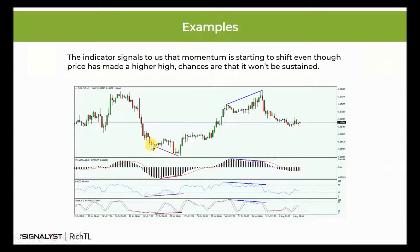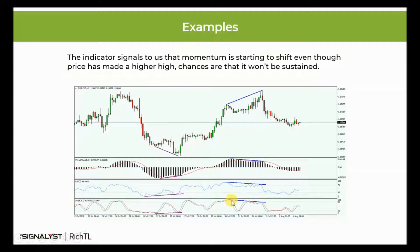Here are two live examples. Here we have a regular bullish divergence, as price was making a lower low while MACD, RSI, or Stochastic — you can use any one — was making a higher low. And here we have a typical regular bearish divergence, as price was making a higher high while the indicator was making a lower high. So the indicator signals to us that momentum is starting to shift.